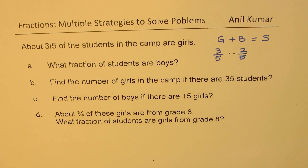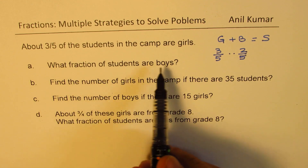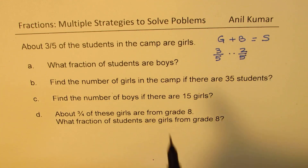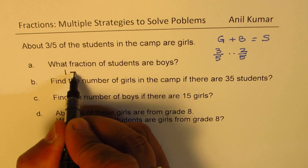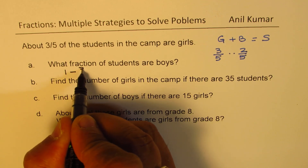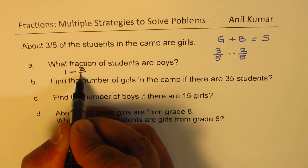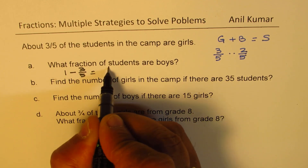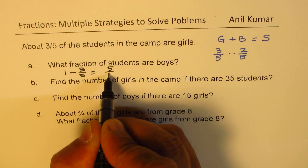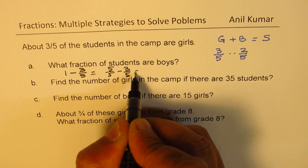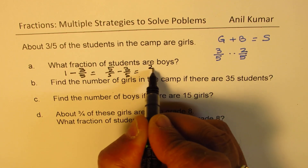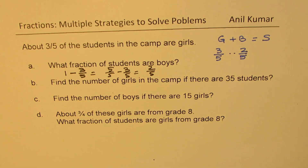Another way to think about it: we are talking about one whole, which represents all the students. So you could do one minus three out of five. One means five out of five, minus three out of five, and that gives two out of five. So learning how to subtract fractions from a whole number helps you solve this question.